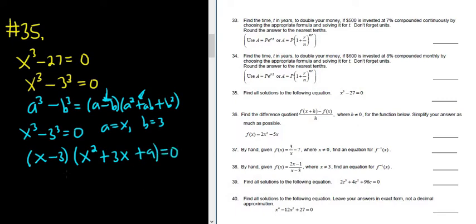So we have a product equal to 0, so we can set each piece equal to 0. So x minus 3 is equal to 0, or x squared plus 3x plus 9 is equal to 0. The first one is really easy to solve. We get x equals 3. That's one of the answers.